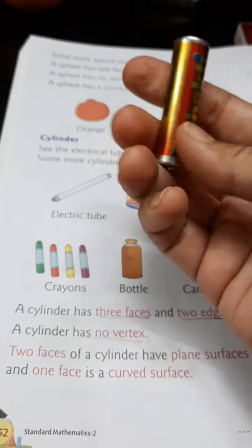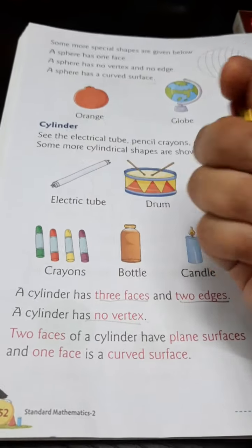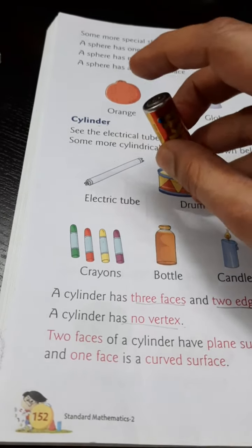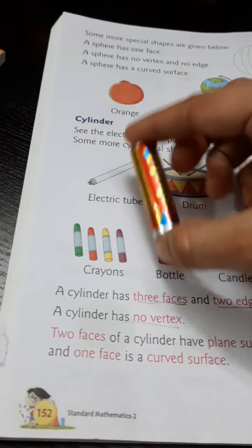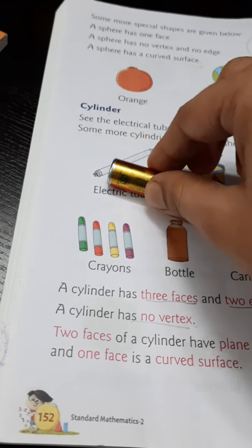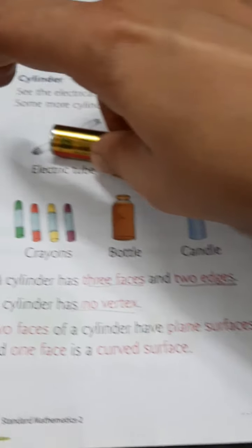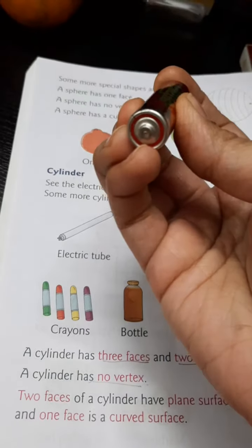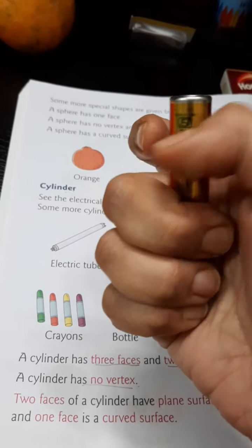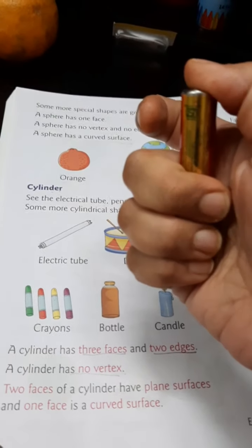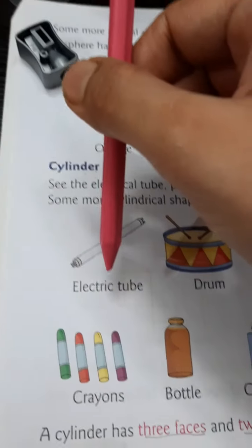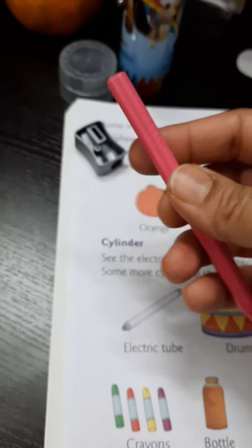I will show you the example of a pencil cell — it is of cylindrical shape. See, it has three faces: this is the first face, this is the second face, and this is the third face. Two faces of a cylinder are plane surfaces and one face is a curved surface. The crayons we use are also cylindrical in shape.